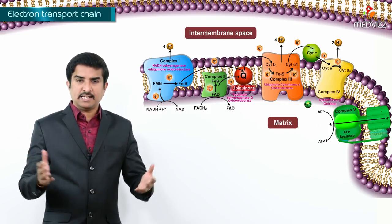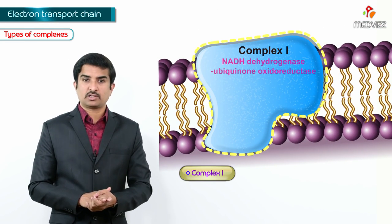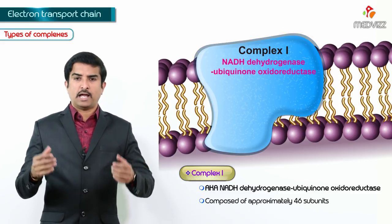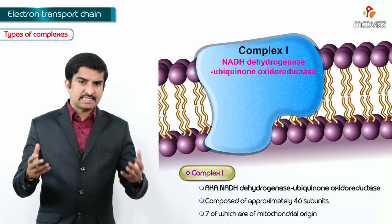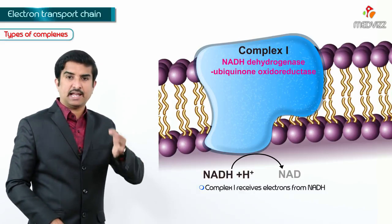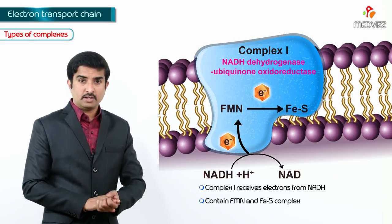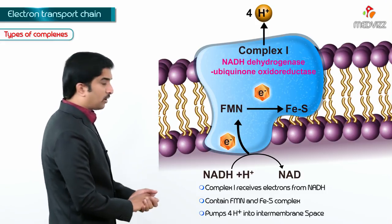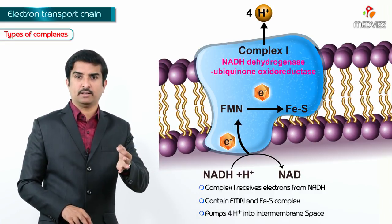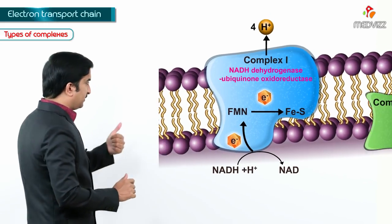Complex 1 is also called NADH dehydrogenase ubiquinone oxidoreductase. It is composed of approximately 46 subunits, only 7 of which are of mitochondrial origin. Complex 1 receives electrons from NADH, contains FMN and an iron-sulfur (FES) complex, and pumps 4 protons (hydrogen ions) into the intermembrane space.